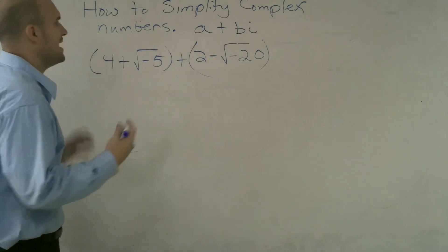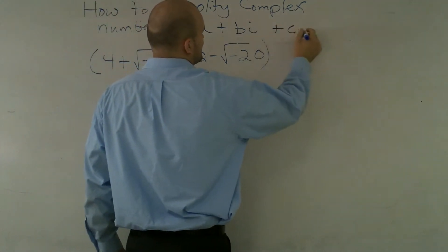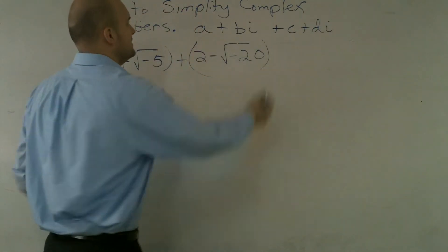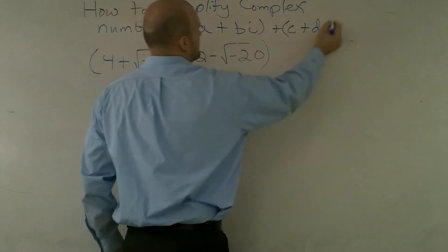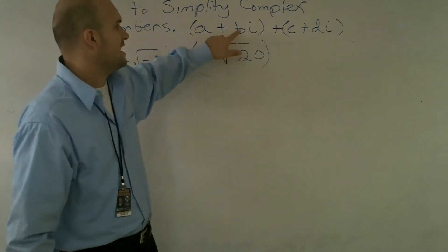When I'm adding complex numbers, let's say (a + bi) plus (c + di), what I'm going to do is add a and c, and add b and d.